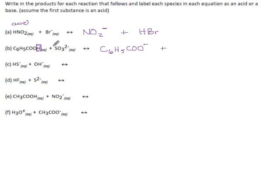And if the sulfite ion acquires a hydrogen, you add a hydrogen to the formula, and the charge goes up by 1 — so from negative 2 to negative 1.